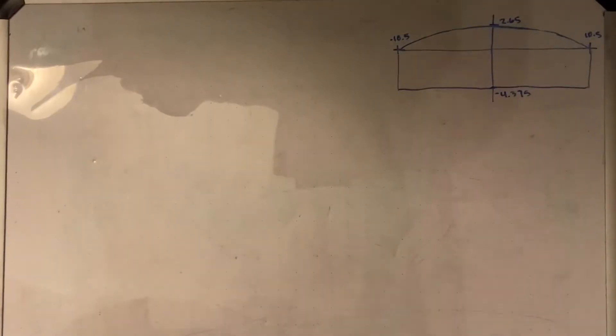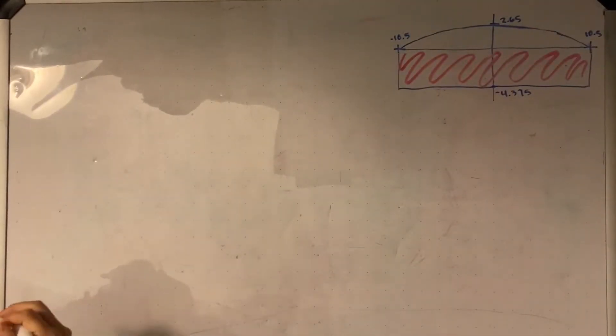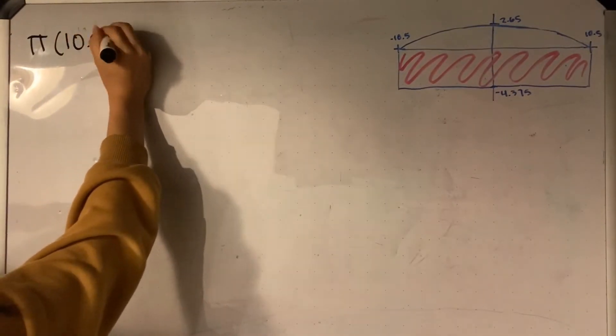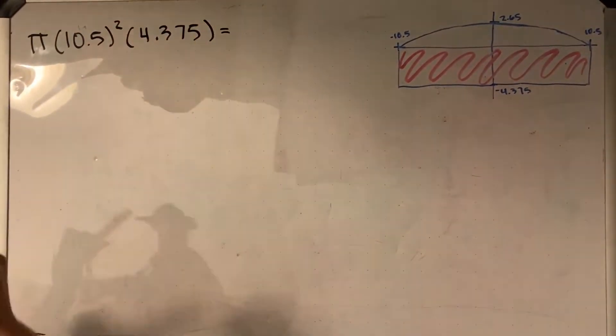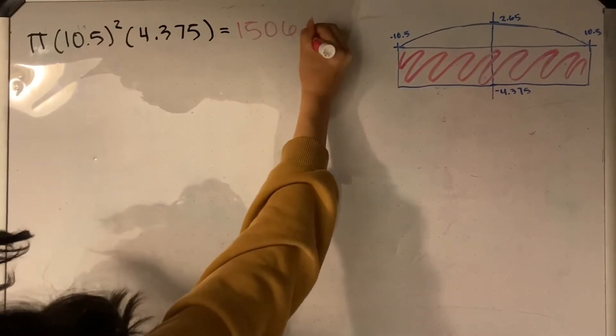Funny that you ask. In my calculus class, we learned about finding the volume of irregular objects with the shell and disk methods. To find the volume of my cake, we can split it into the cylinder base and dome top. Using pi r squared times height, we can find that the volume of the base is 1506.67 cm3.